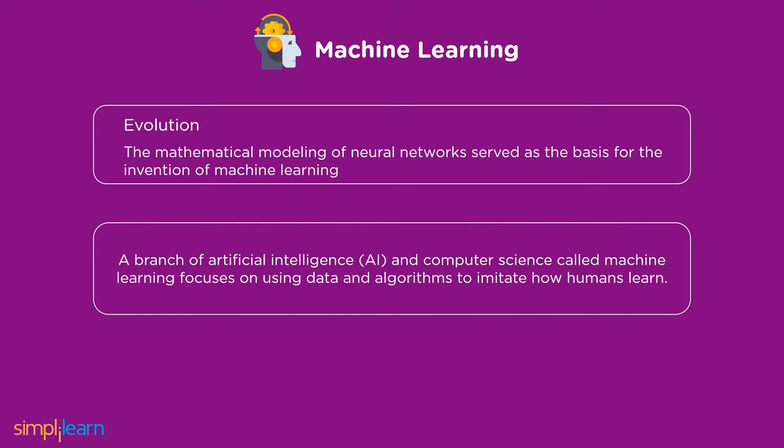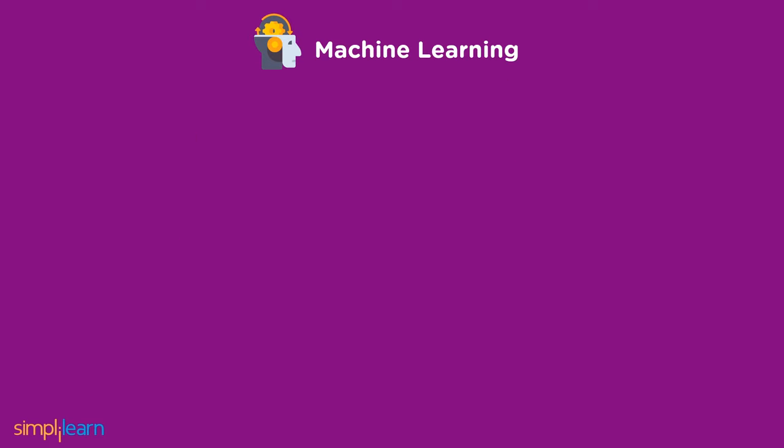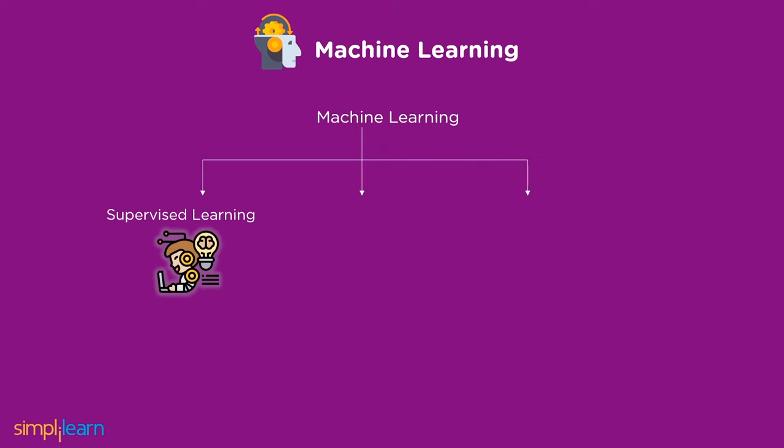Machine learning is a branch of artificial intelligence and computer science that uses data and algorithms to imitate how humans learn, gradually increasing the system's accuracy. There are three types of machine learning: supervised learning, unsupervised learning, and reinforcement learning.